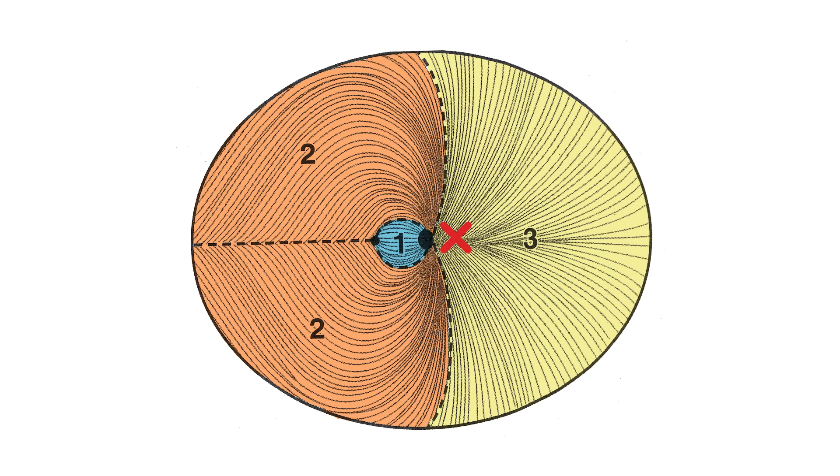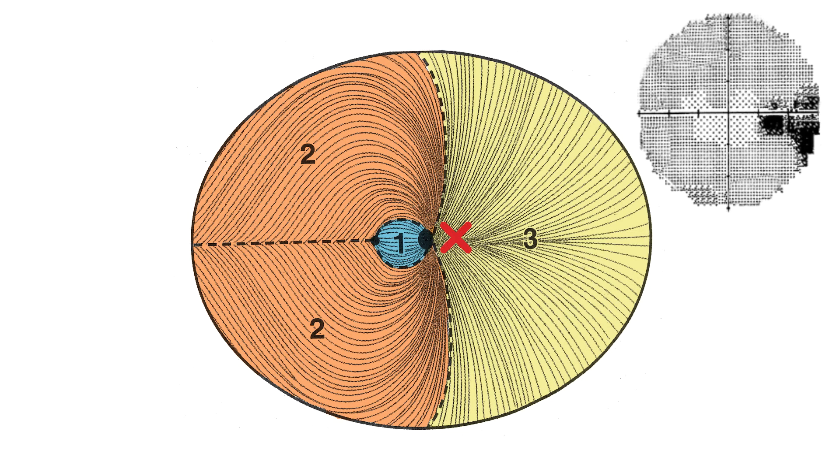Damage to the nasal radial bundle of retinal ganglion cell axons is rare. It causes temporal wedge defects. Congenital optic nerve dysplasias are typically responsible for these defects.